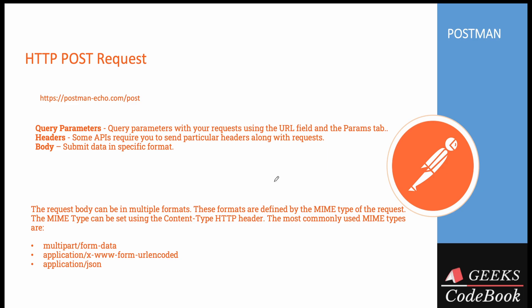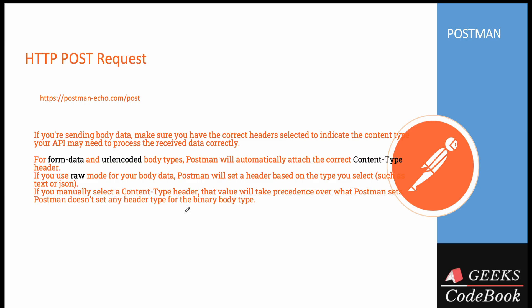When submitting data you define what kind of format your data is using the Content-Type property in your request header. Some request headers are added by default by the application — whether you submit a form, make a request using Postman, or add your own header manually. I'll explain the value of the Content-Type header as part of the demo.